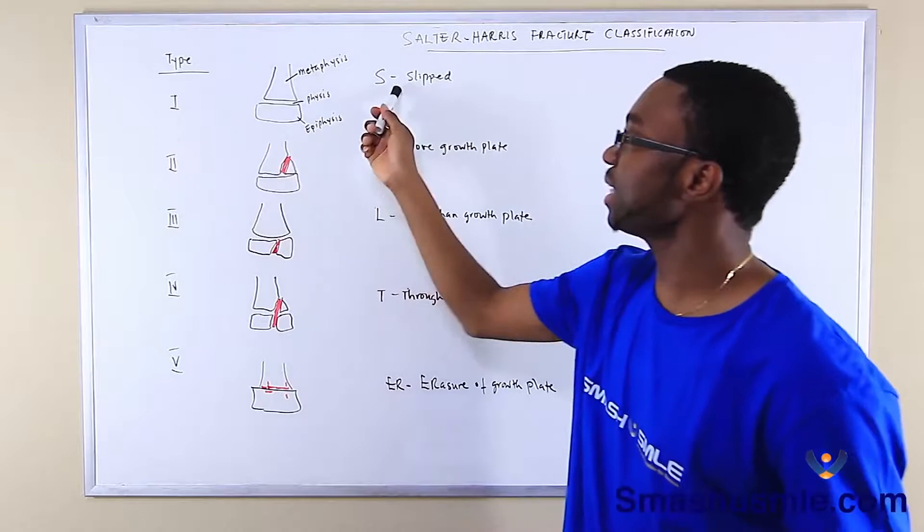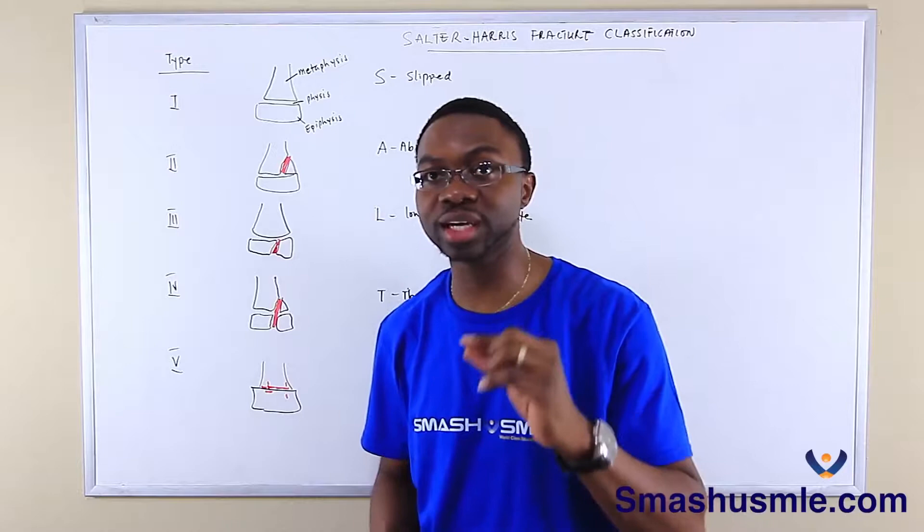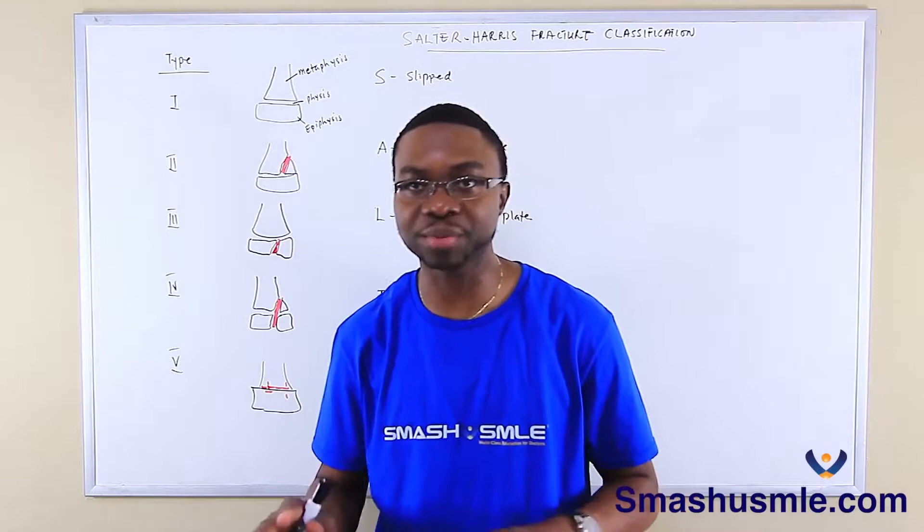Salter-Harris type one is basically a slipped fracture, where the bone basically slipped a little bit. It's a separation through the growth plate. It has excellent prognosis and can be managed non-operatively.